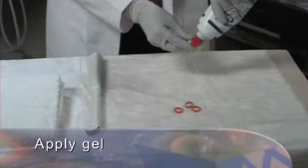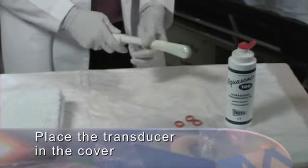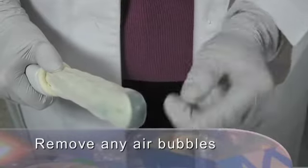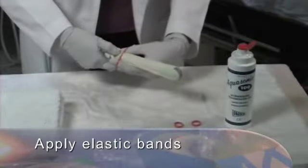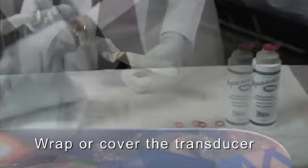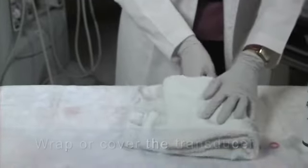Apply gel inside the transducer cover and place the transducer cover onto the transducer. Check carefully and remove any air bubbles that are between the transducer face and the transducer cover. Some labs use elastic bands to secure the cover. When done, wrap or cover the transducer until ready for use.